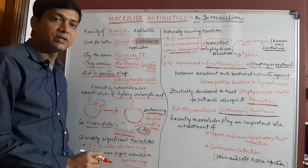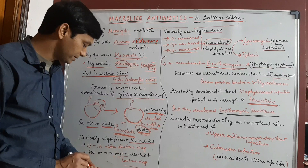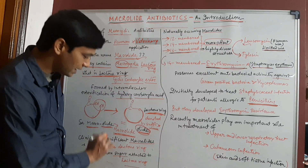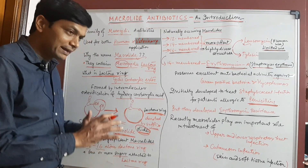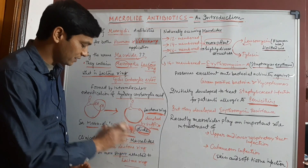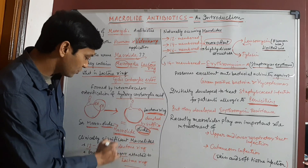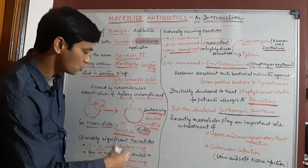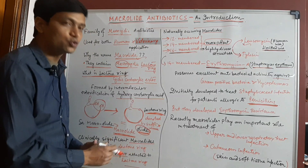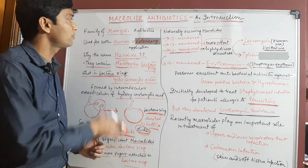Clinically significant macrolide antibiotics contain a 12 to 16 atom lactone ring. A particular characteristic of macrolide antibiotics is that one or more sugar units are attached to this lactone ring, and these sugar units are a specific characteristic of macrolide antibiotics.